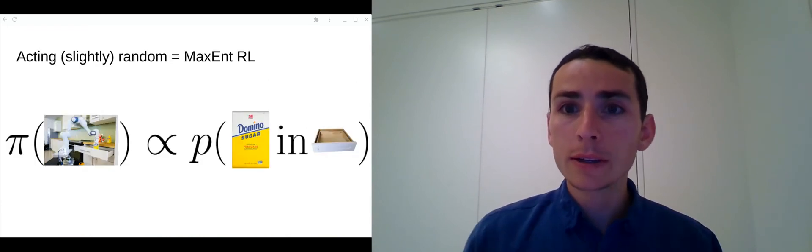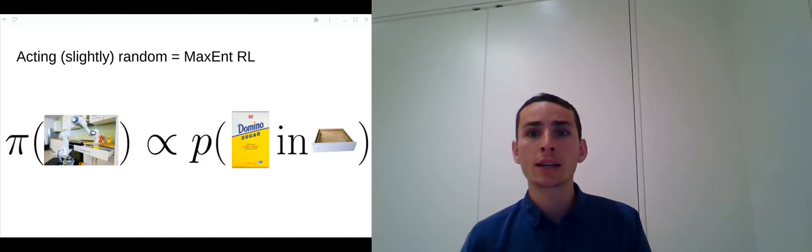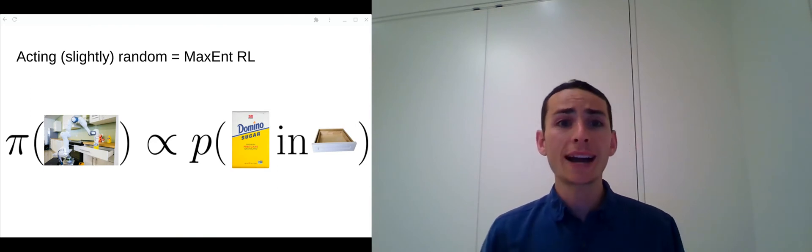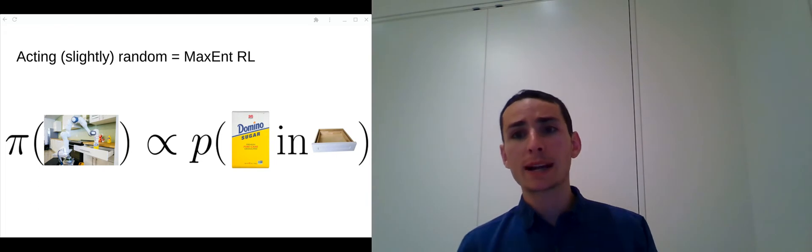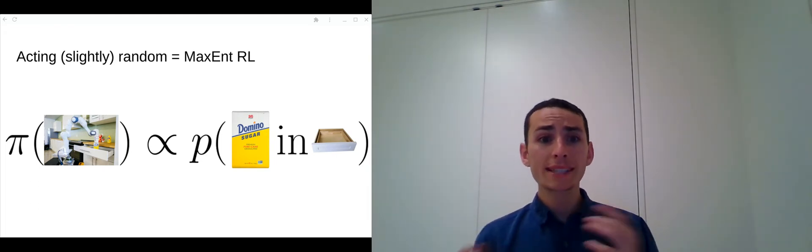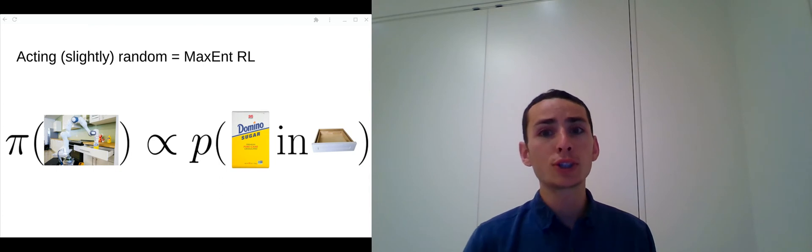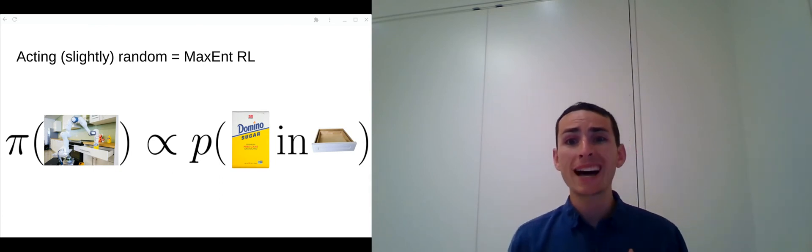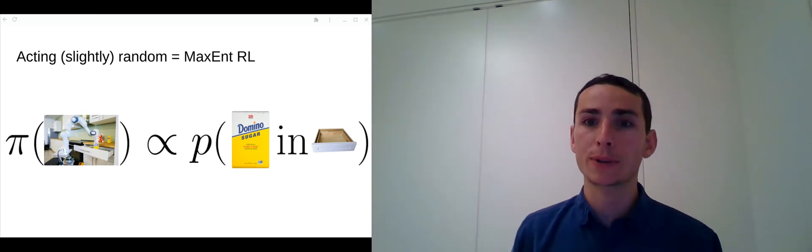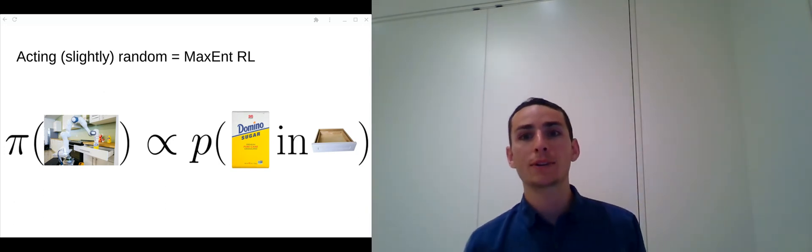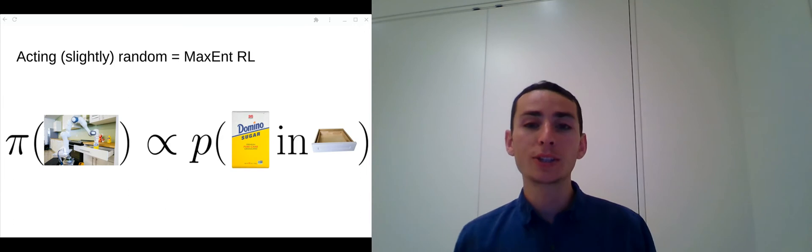To formalize this idea of acting slightly randomly, we look through the lens of maximum entropy reinforcement learning. Whereas standard RL says you should choose whichever behavior has the highest likelihood of solving the task, maximum entropy RL says you should sample behaviors proportional to the likelihood that they solve the task.